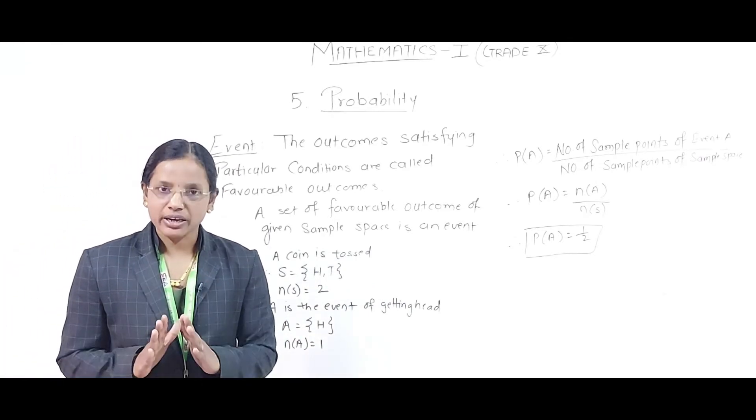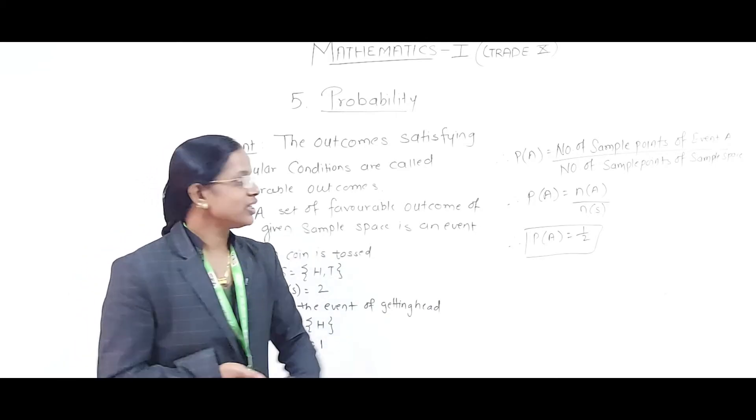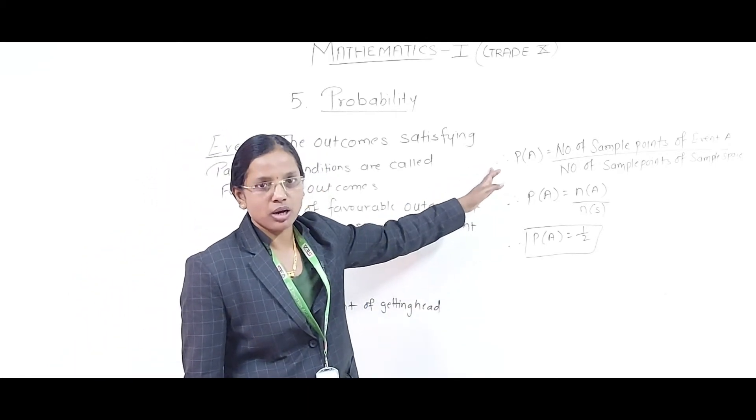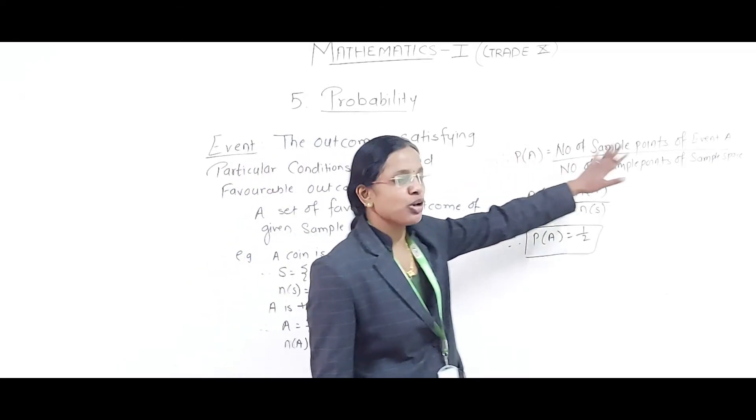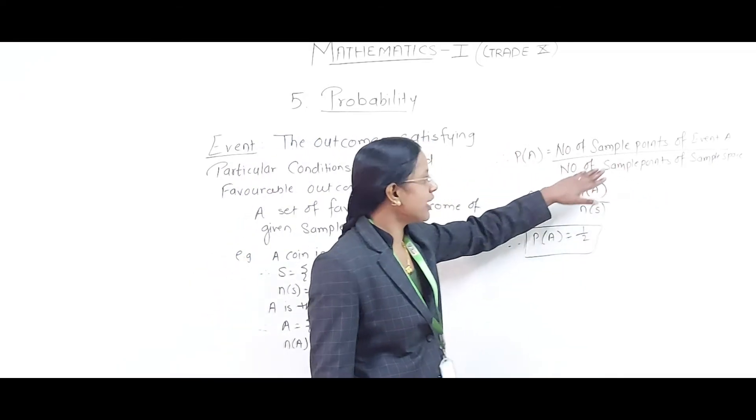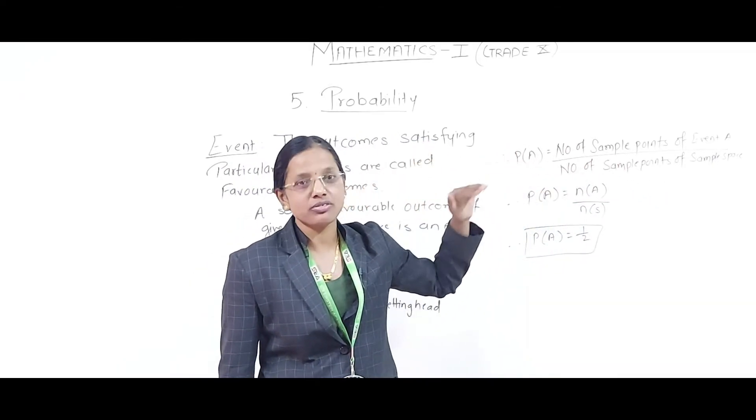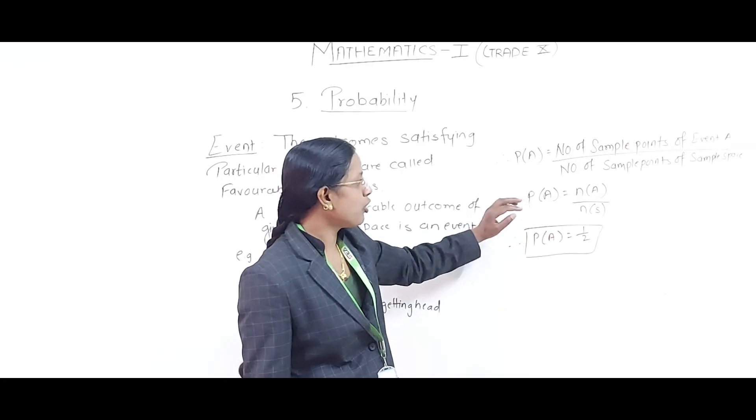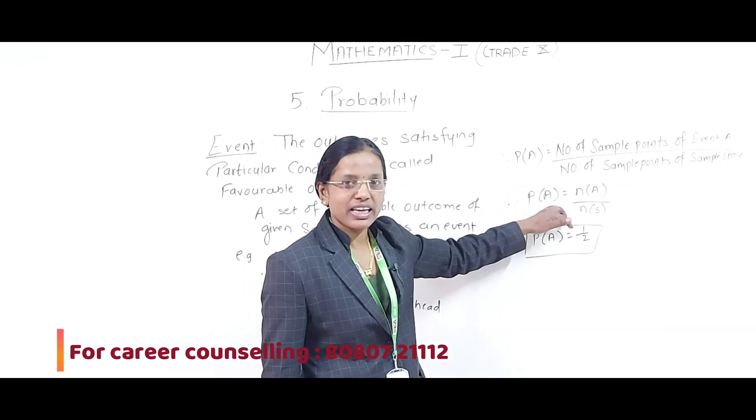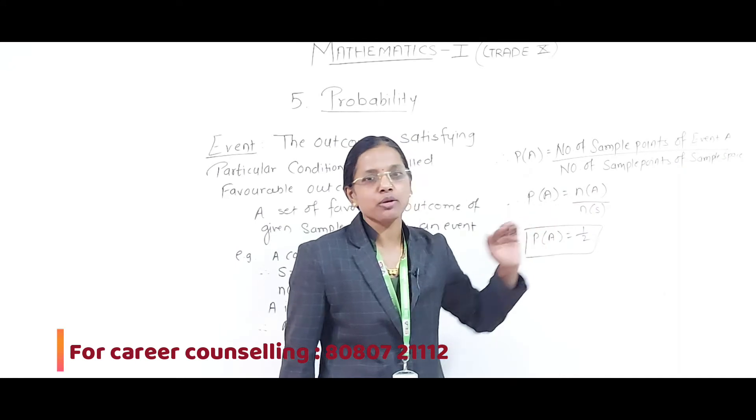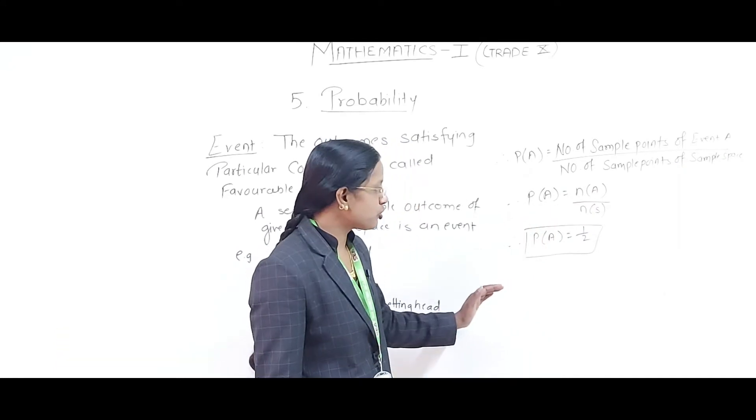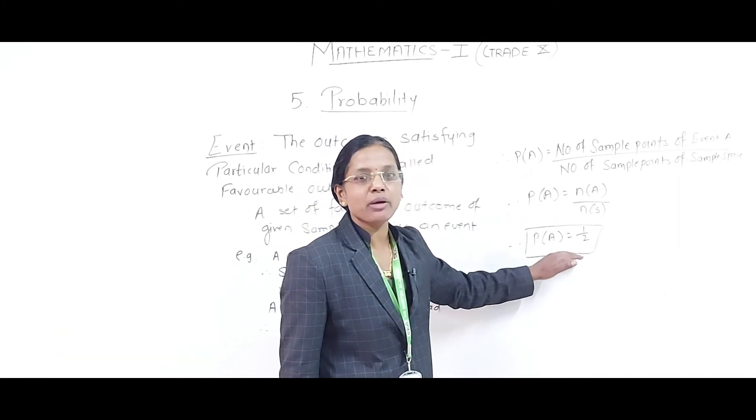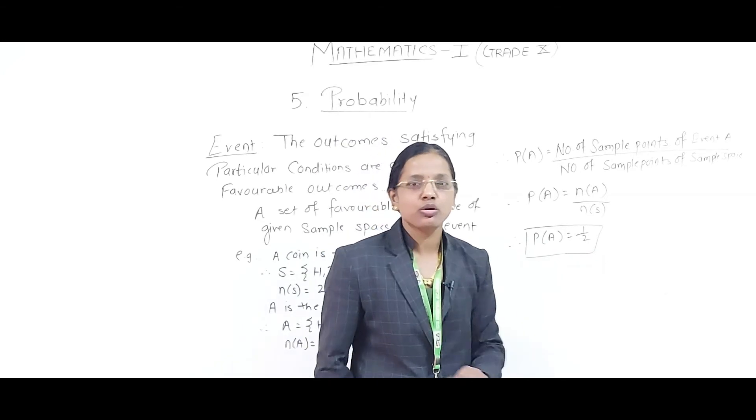Finally, the probability of a given outcome will be the number of sample points of event A divided by the number of sample points of sample space. Therefore, probability of event A = n(A)/n(S). When we substitute the values, we get P(A) = 1/2.